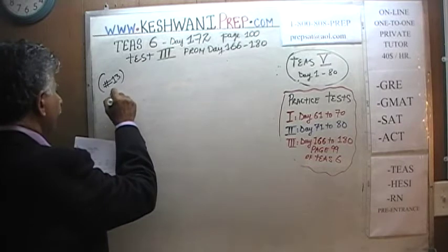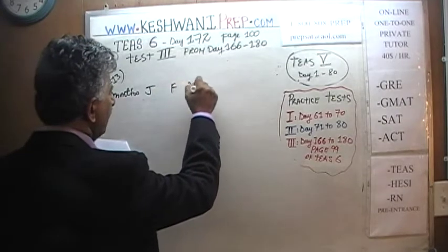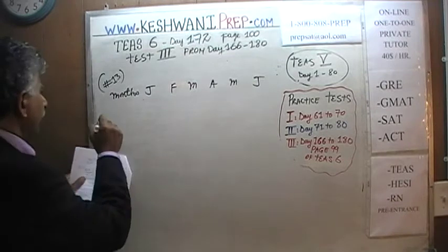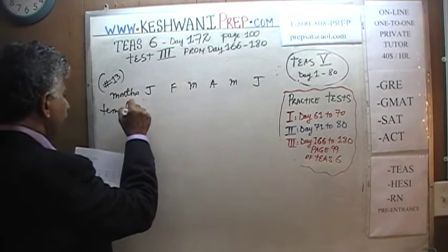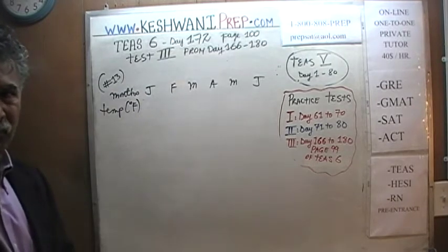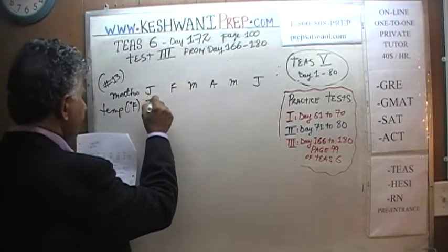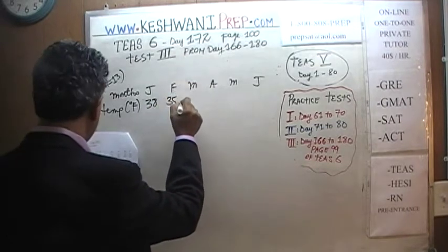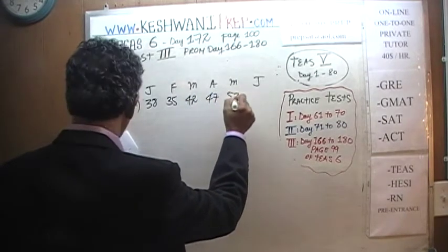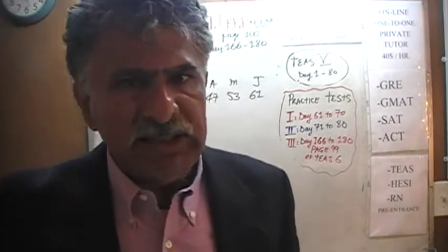We are given months: January, February, March, April, May, and June — six months. We are given the temperature expressed in degrees Fahrenheit. In January the average temperature was 38°F, in February it was 35, in March it was 42, April it was 47, then 53 in May, and by June it was a nice warm 61 degrees.